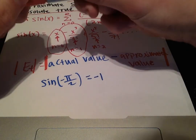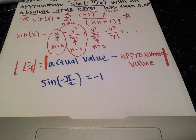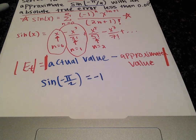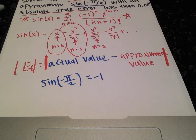The best way to do this is to set up a table of values with your respective n values, the terms, the approximation, and the absolute true error.